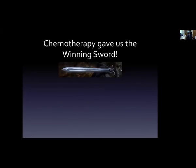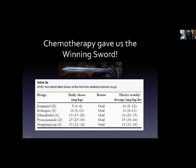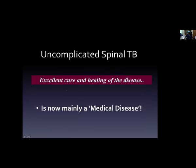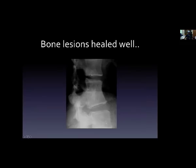What really dramatically changed the whole thing was chemotherapy. Chemotherapy gave us the winning sword. Just after the invention of all these important drugs — isoniazid, rifampicin, ethambutol, pyrazinamide, and streptomycin — suddenly we had the winning sword and the table tilted against the disease. Uncomplicated spinal tuberculosis became a medical disease because with chemotherapy, there was excellent cure and healing. Bone lesions healed excellently; without any surgery, you can see good bony fusion and very good results — all with chemotherapy.